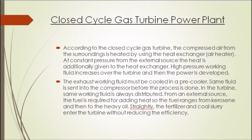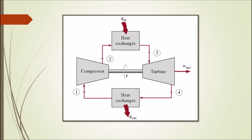From an external source, fuel is required to add more heat energy, so the fuel ranges from kerosene to heavy oil. The closed cycle operates like a closed loop system, with a heat exchanger added after the turbine. This heat exchanger collects the exhaust gas from the turbine and returns it to the compressor again at a state of lower pressure and temperature.